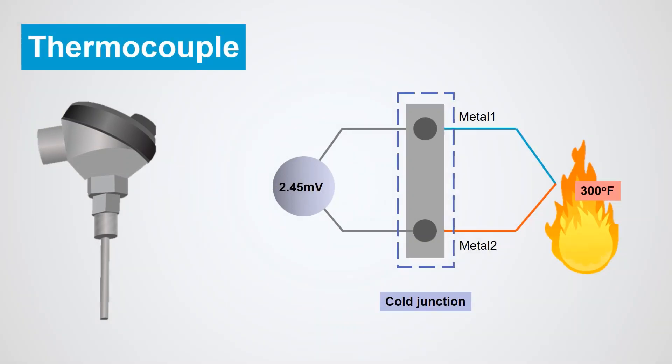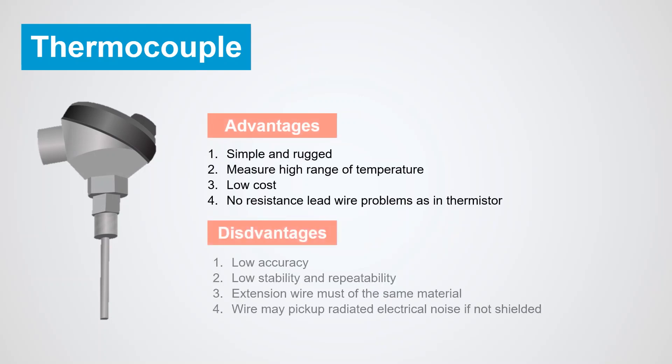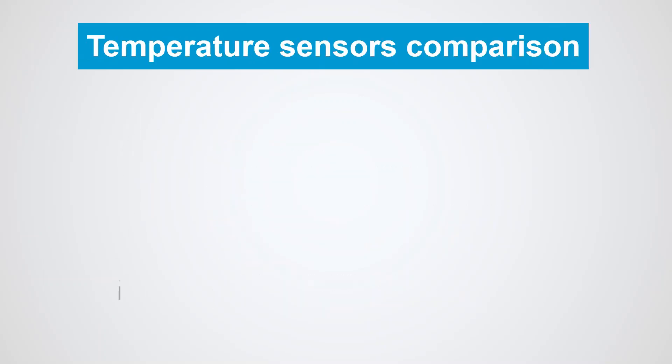Thermocouples are commonly used for furnaces, gas turbine combustion chamber, high temperature exhaust ducts, etc. The main limitation of thermocouples is its accuracy which doesn't make it the best solution for precise applications.